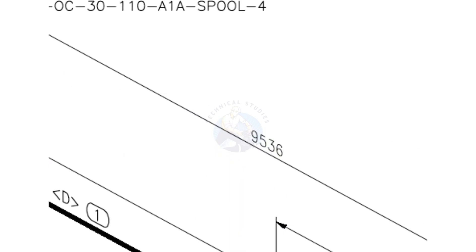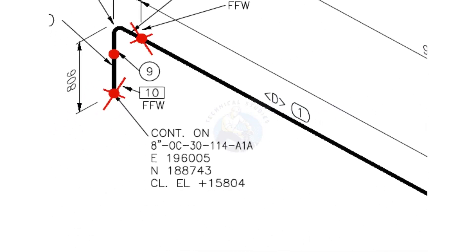Let us check the diameter of the pipe. What is the item number? Item number is 1.